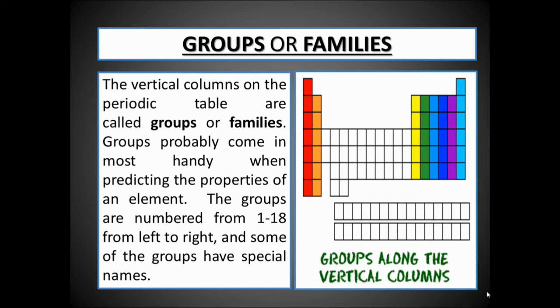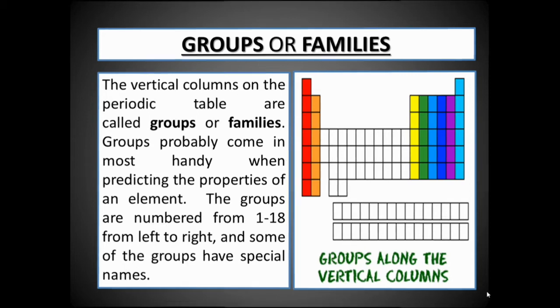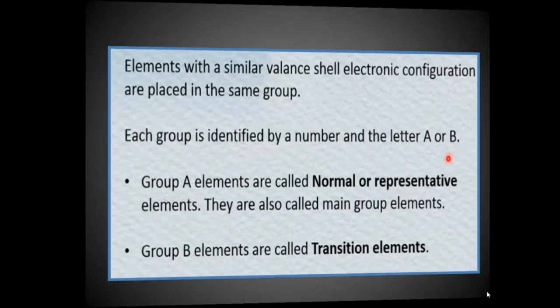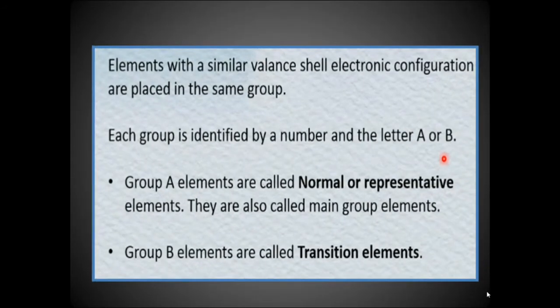Groups, also called families, are arranged 1 to 18 from left to right, and some groups have special names. Groups run along the vertical column from top to bottom, from lighter to heavier elements. Elements with a similar valence electron configuration are placed in the same group, and each group is identified by a number.